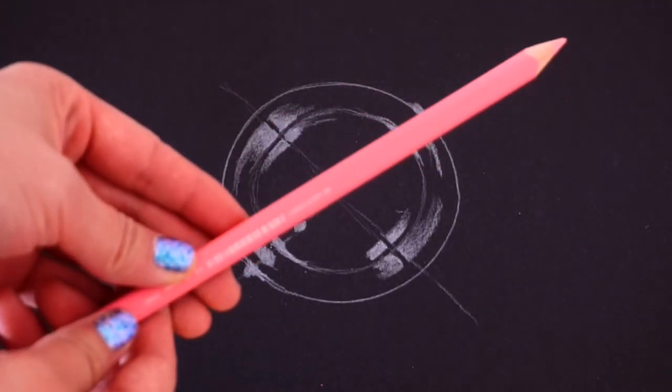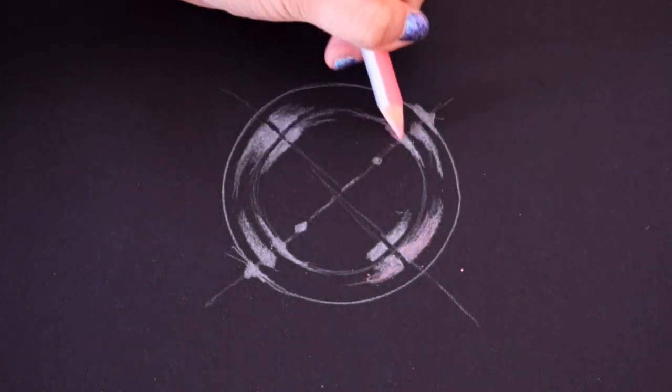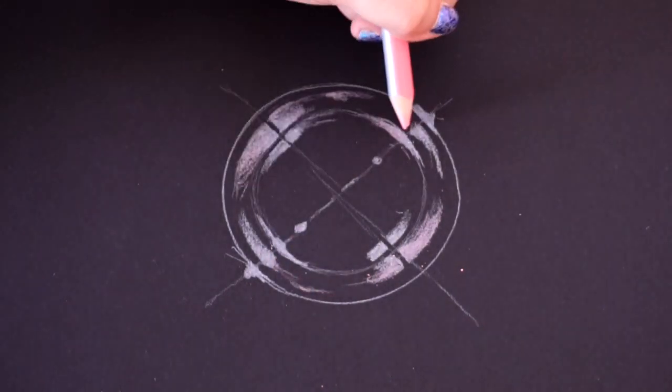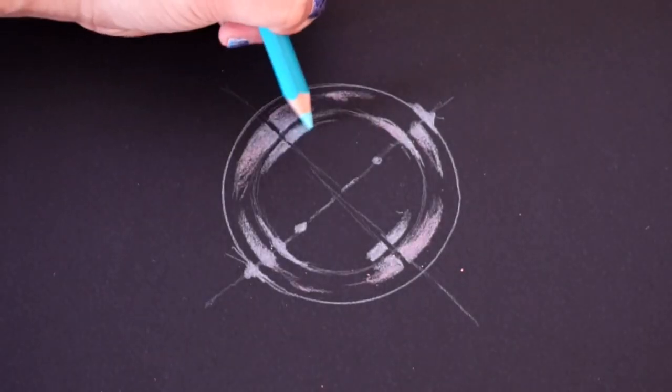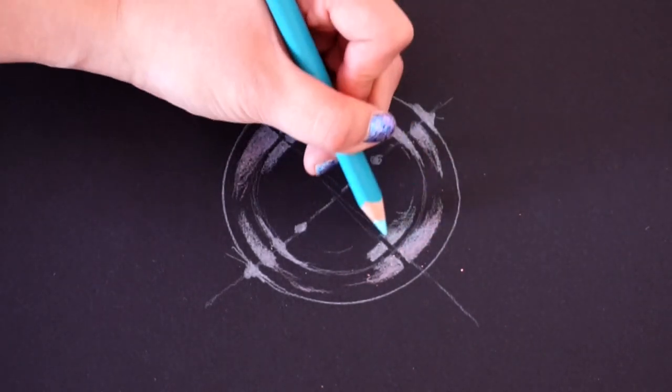Now take a colored pencil, I'm starting with pink, and gently begin adding some tints to the reflections. Switch to another pencil and start building up a pastel rainbow effect using all the colors you picked out in the beginning.